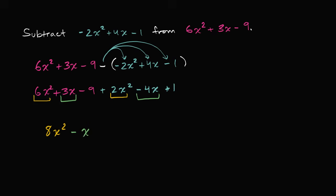And then finally, I can deal with our constant terms. I'm subtracting a 9, and then I'm adding a 1. So you could say, well, what's negative 9 plus 1? Well, that's going to be negative 8. And we are all done.